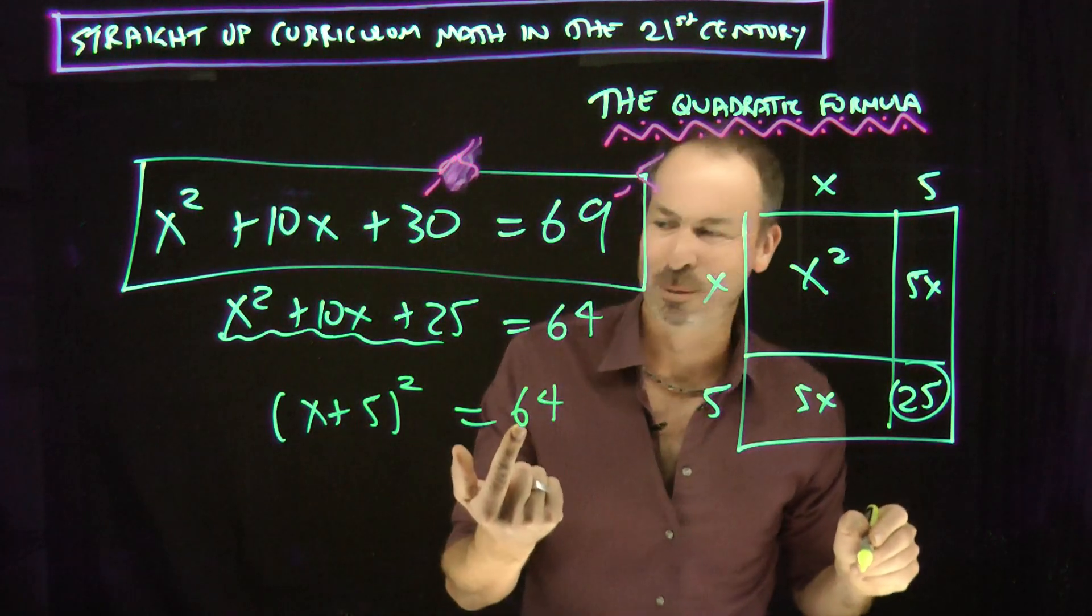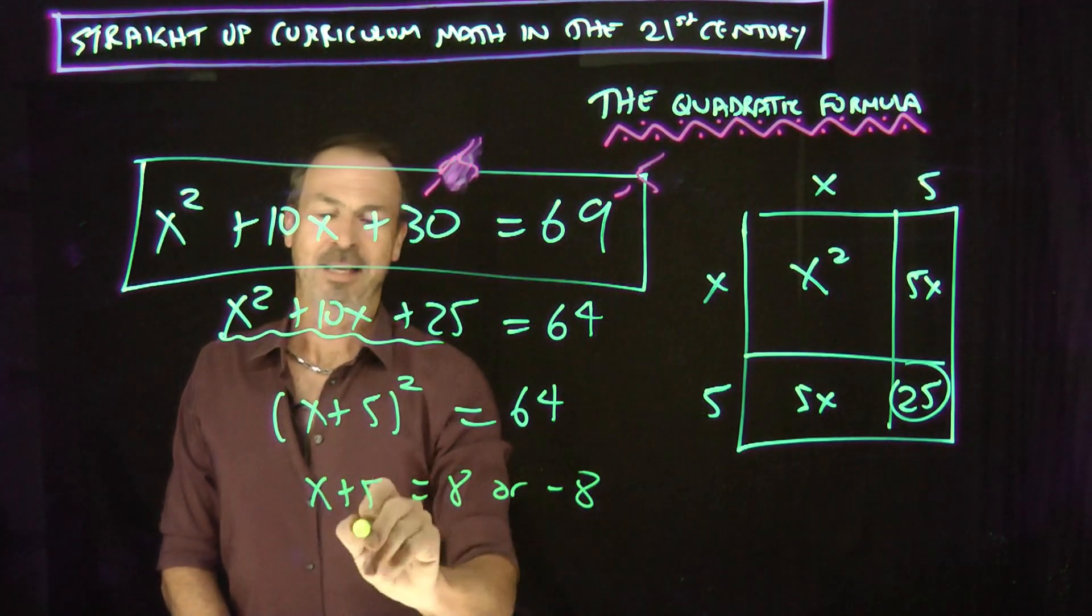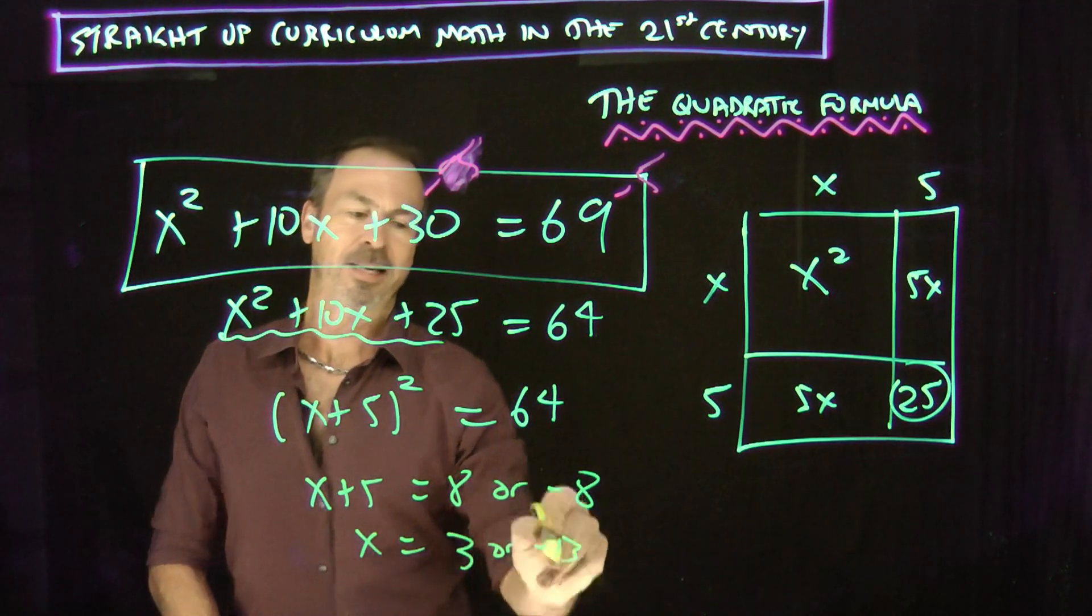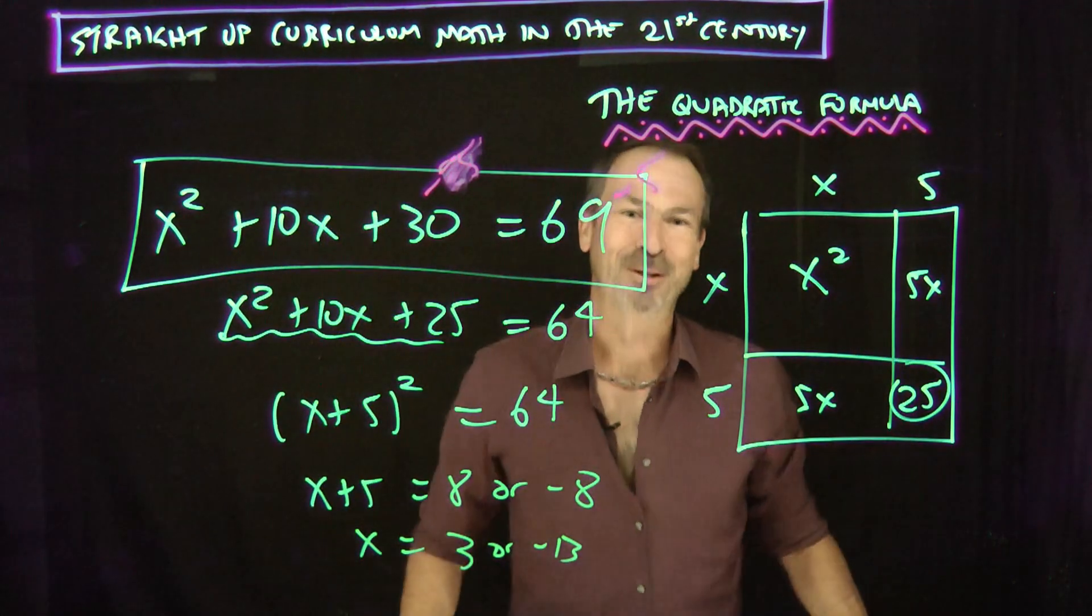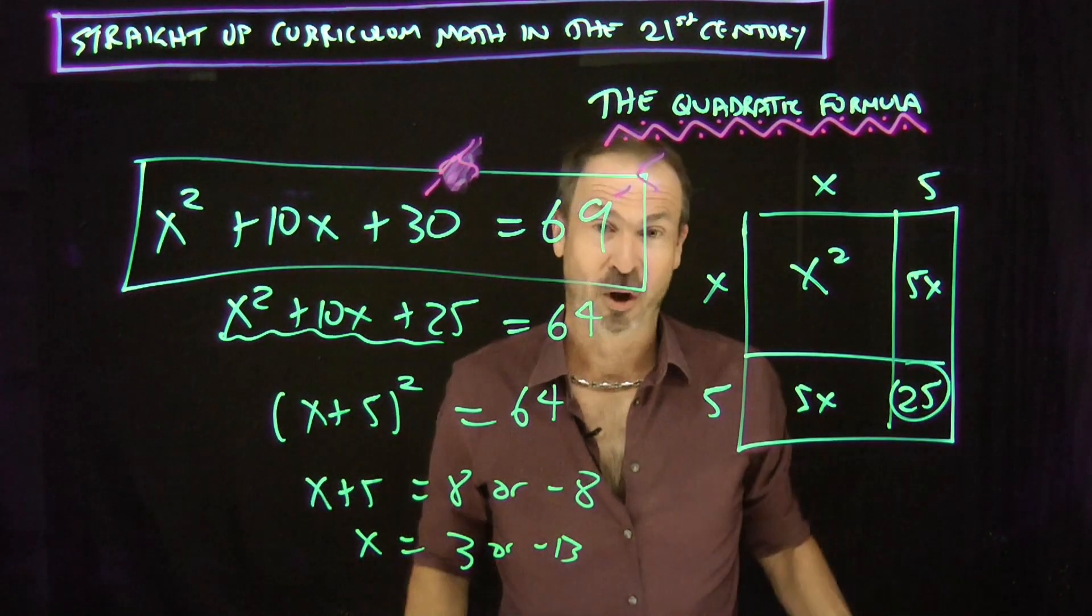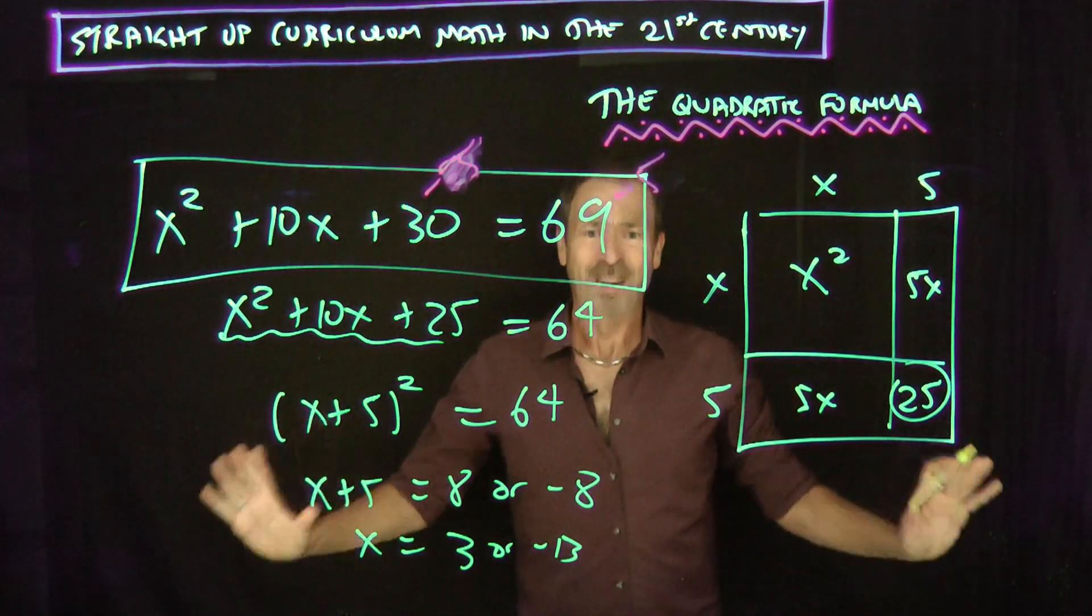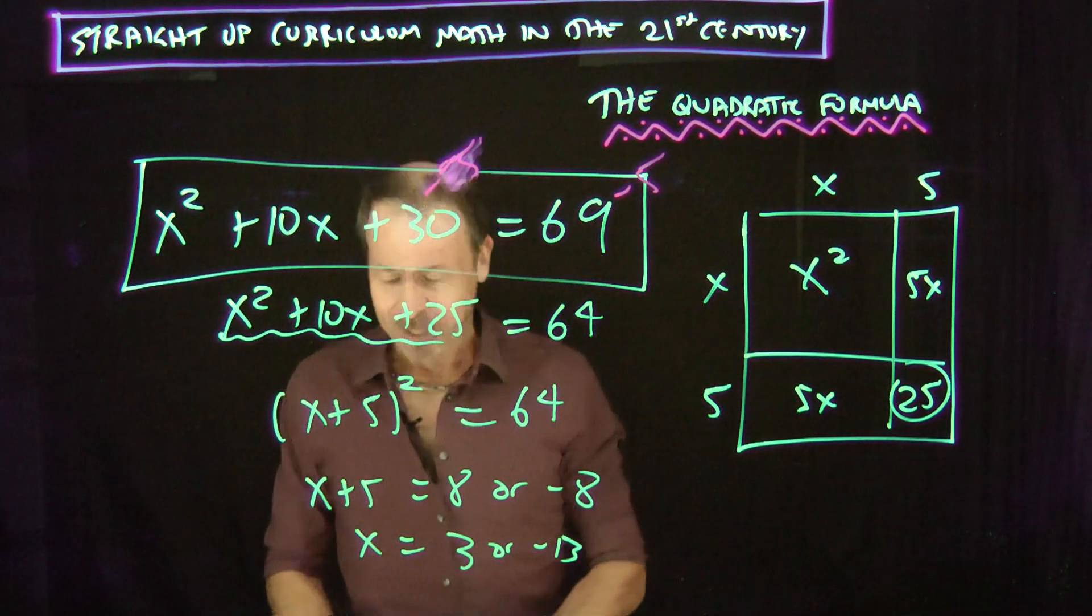X plus 5 squared apparently equals 64. And I chose really nice numbers when I created this problem. X plus 5 is 8 or negative 8. X must be 3 or negative 13. Love it. Absolutely love it. Alright. Now there's plenty of practice problems in the documents with these videos. But let's keep going. Let's go to level 5 that we're on now. Level 5. Let's do it. Woohoo.